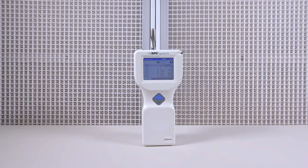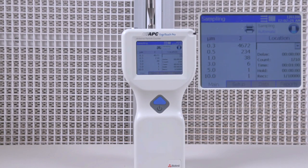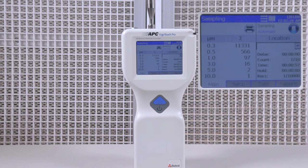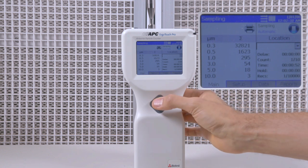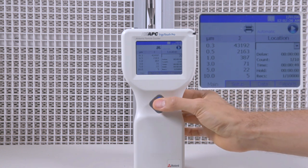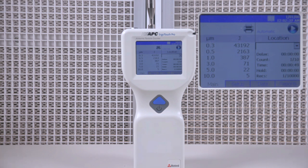Now the machine begins sampling. Notice how the numbers on the left begin to quickly rise as the counter calculates the particles in the air. Again, we'll only be taking a 10 second sample, so let's go ahead and stop the run.